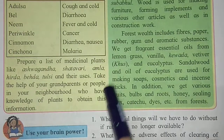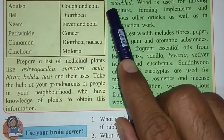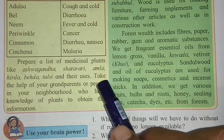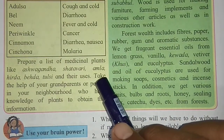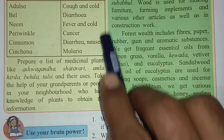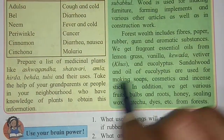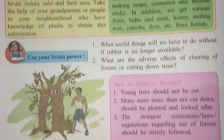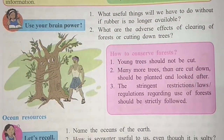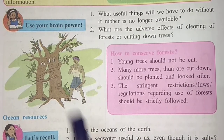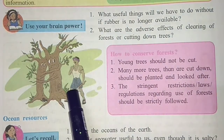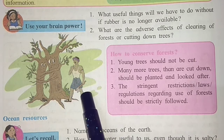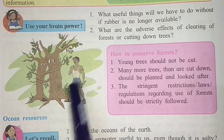From this we can say that forests are useful to us in many ways — they work as a protective function and also have a productive function, so they are beneficial from both sides. There is a 'Use Your Brain Power' point with a picture of trees holding each other with a man holding an axe — depicting the need to save trees.